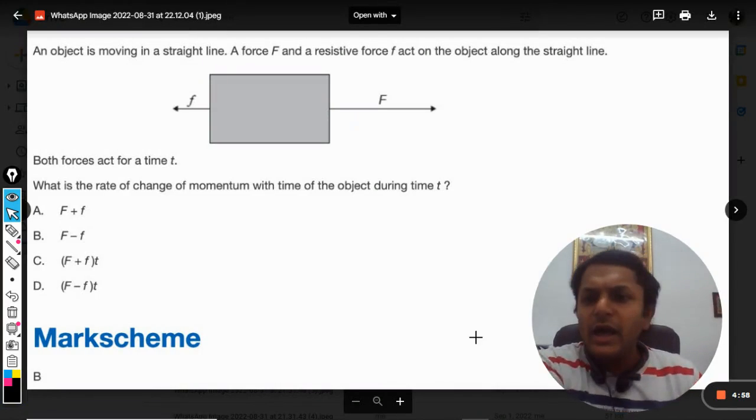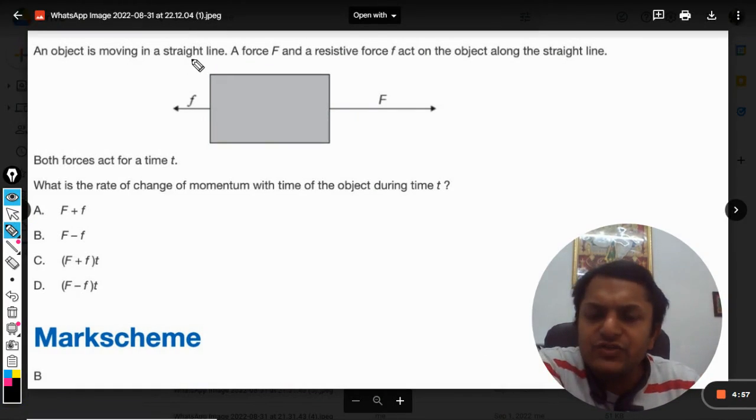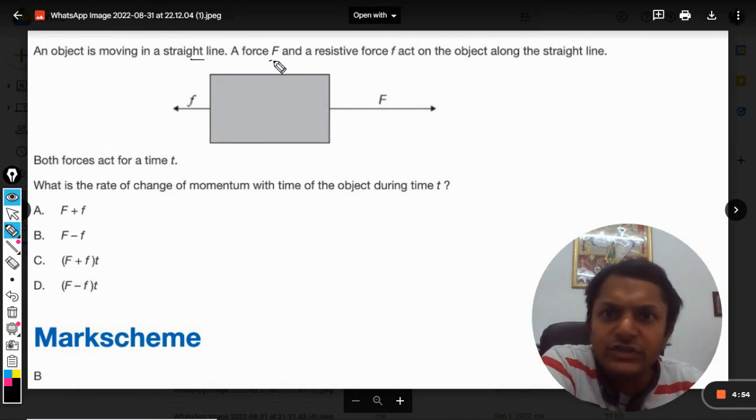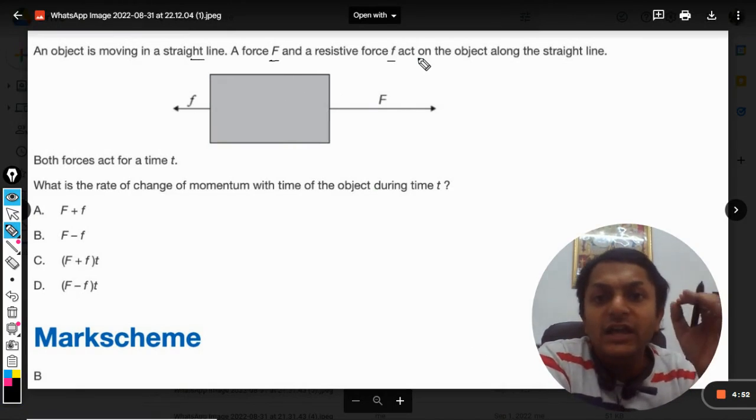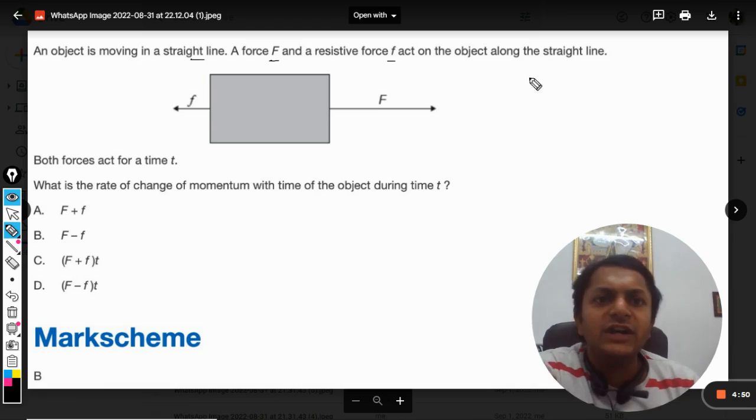An object is moving in a straight line. A force F and a resistive force small f act on the object along the straight line, as shown in the diagram. Both forces act for a time t.